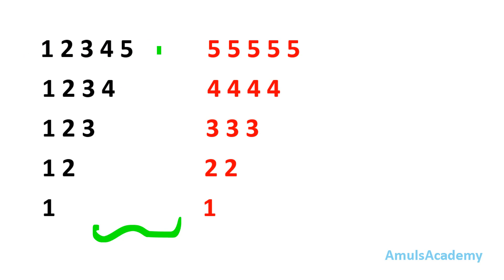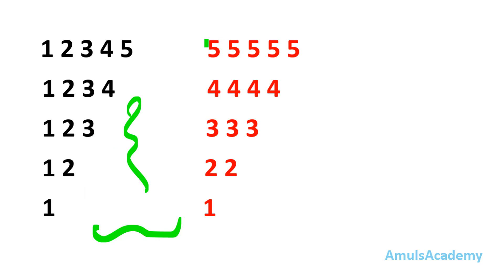We want to print: 1 2 3 4 5, then 1 2 3 4, then 1 2 3, then 1 2, and finally 1. In the second pattern we want to print 5 5 5 5 5, then 4 4 4 4, then 3 3 3, then 2 2, and 1.